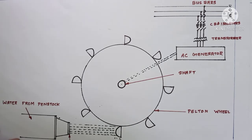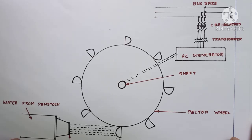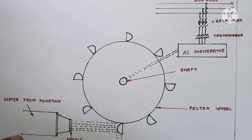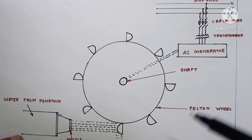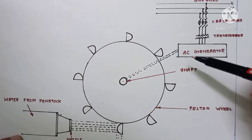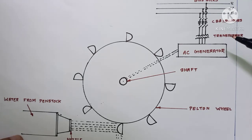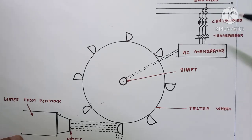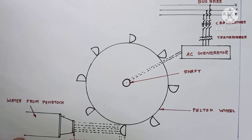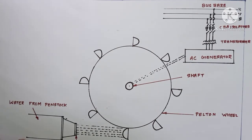In a hydroelectric power plant, two energy conversions take place: first, the hydraulic energy is converted into mechanical energy at the turbine, and then this mechanical energy is converted into electrical energy at the AC generators or alternators. From there it is connected to the bus bar and we can use the electrical power.